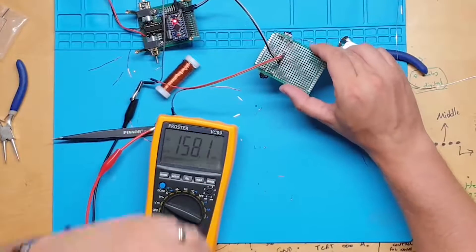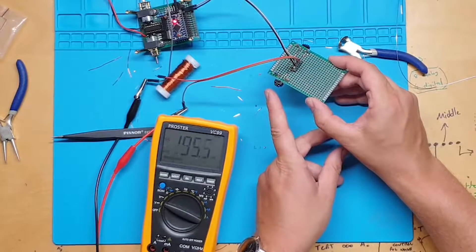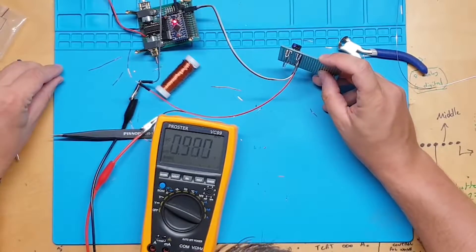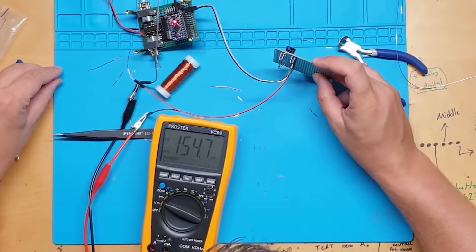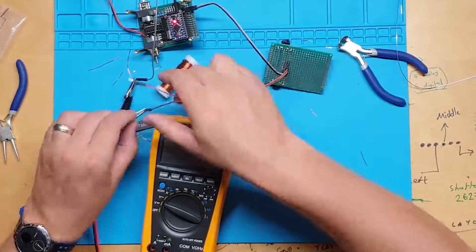I'm using a digital multimeter to test the TCRT5000 sensors. I've connected 5 volts and ground from Mipper to the odometry module and connected the positive meter probe to the sensor output pin and the ground probe to the ground.